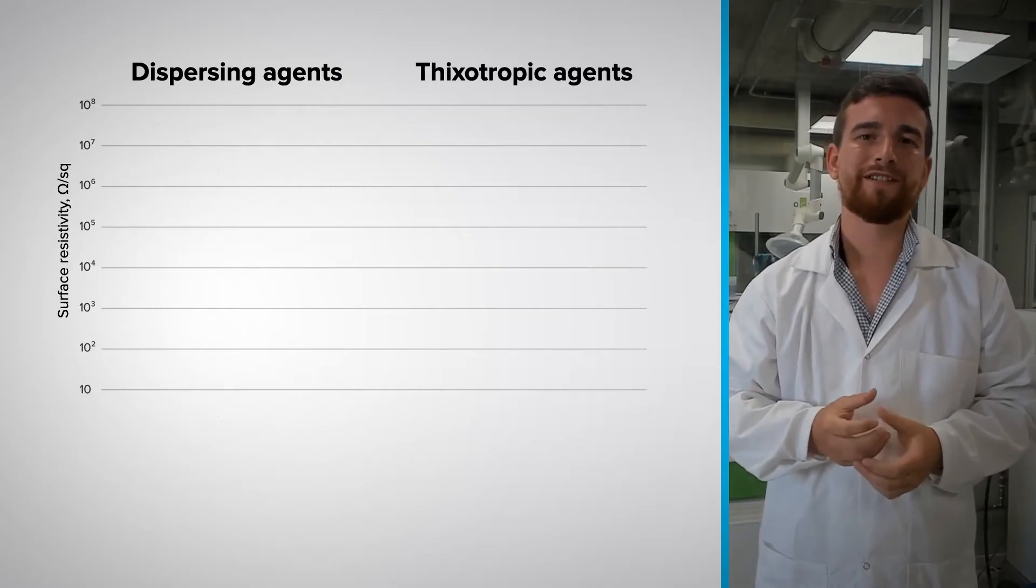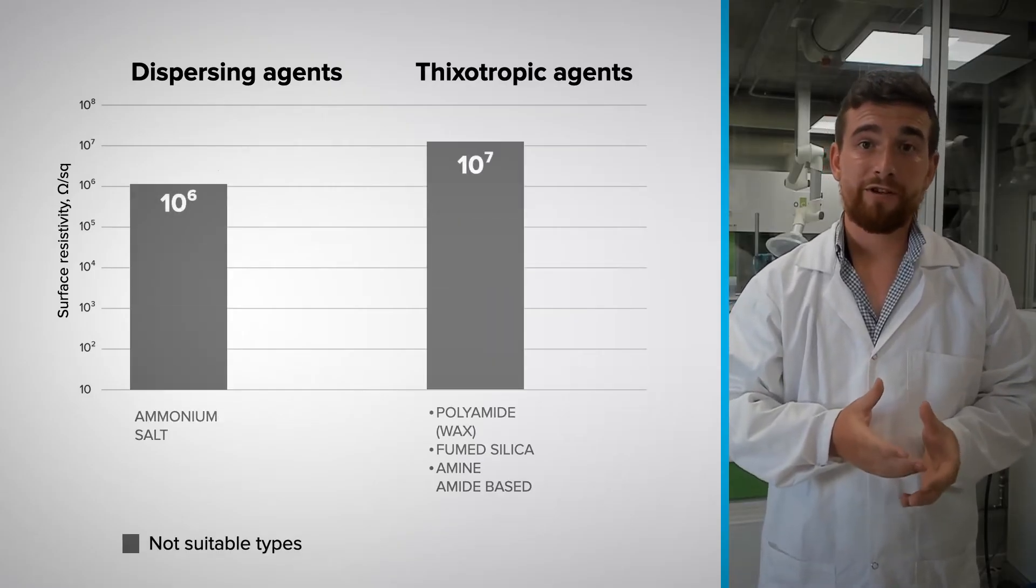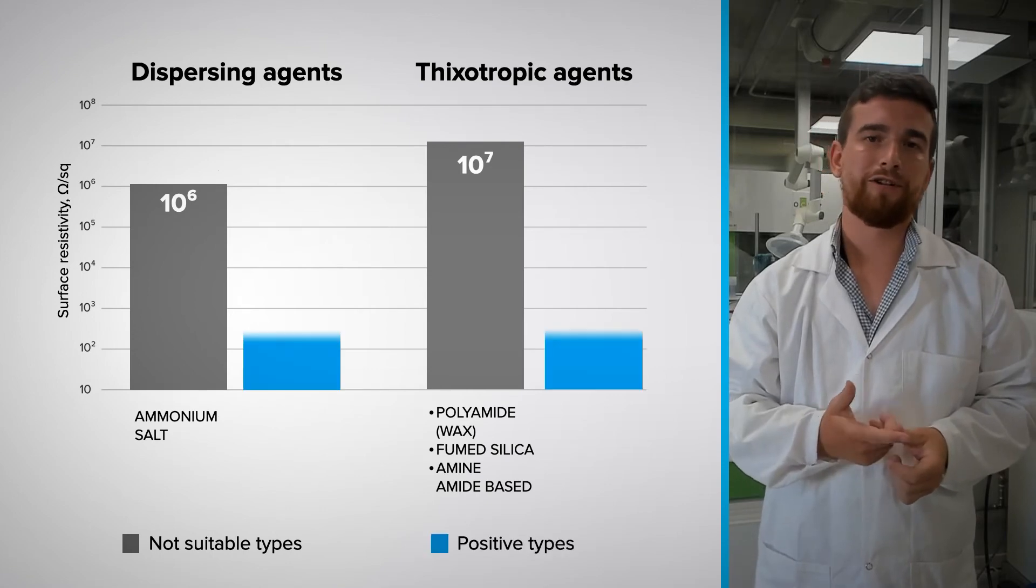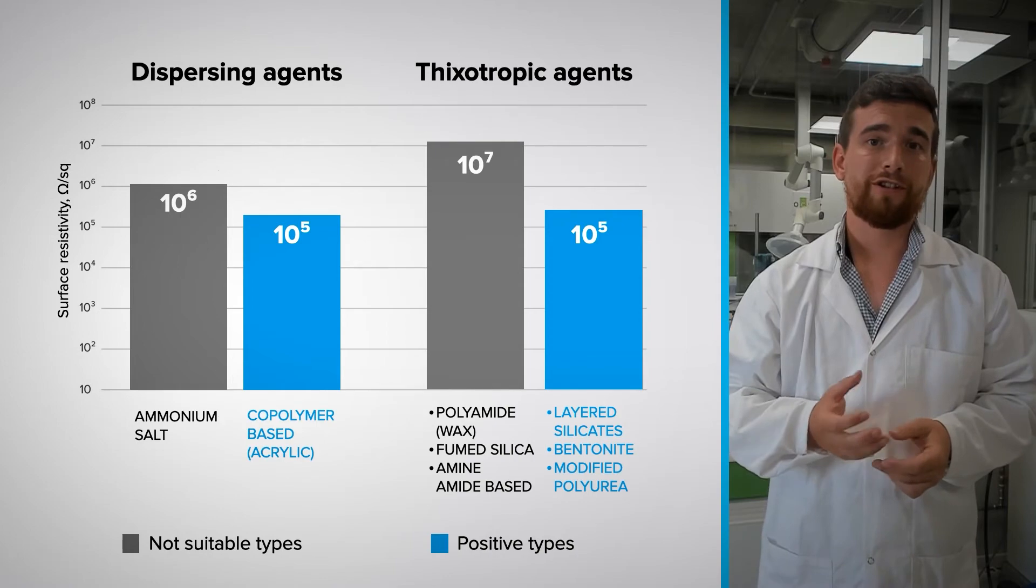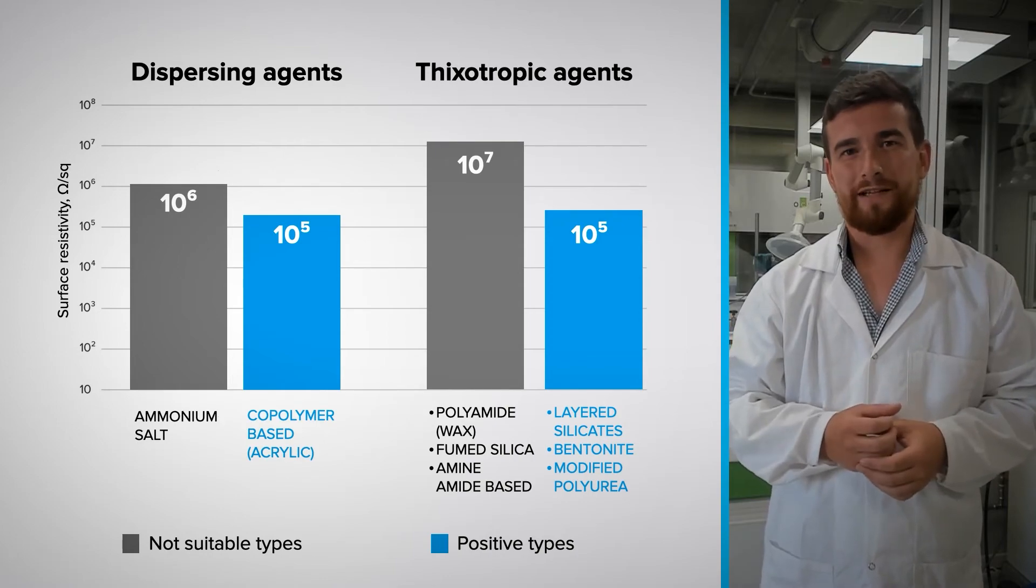And for thixotropic agents, we suggest using either layered silicates, modified polyurea or bentonite type agents in low dosages at roughly around 1 weight percent. These materials stabilize the system without affecting the electrical conductivity.